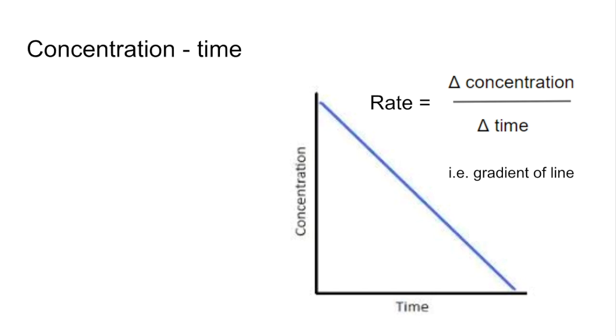So you can see this is a straight line so it has a constant gradient and therefore the rate is not affected by the concentration. So you can see the concentration is changing but that gradient is constant.